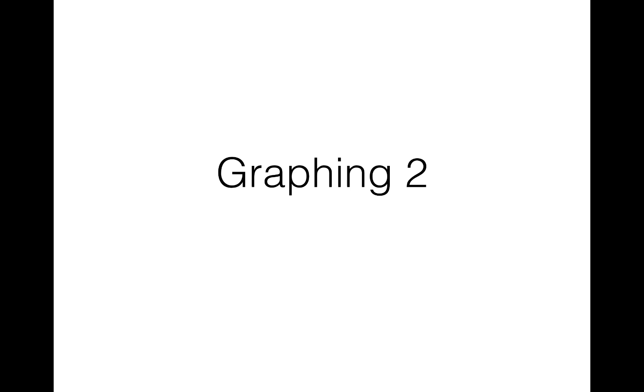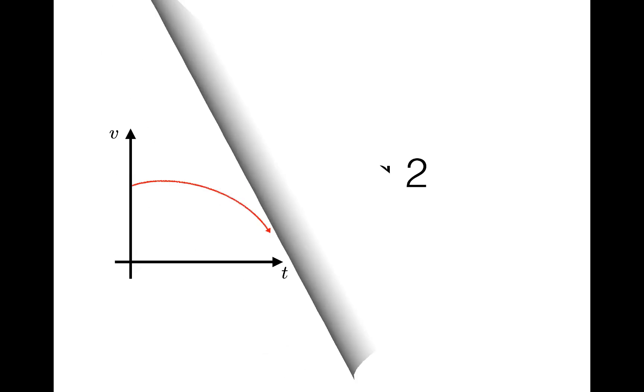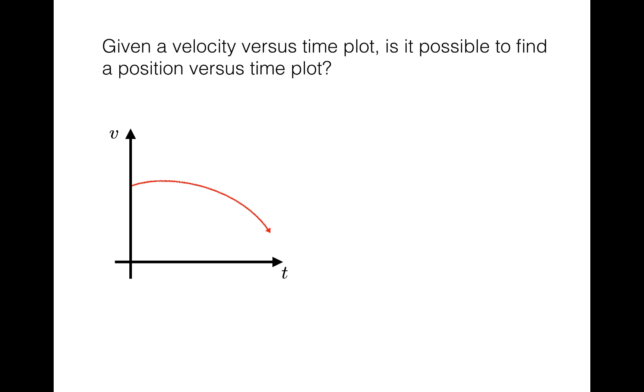This is the second video in a two-part series about graphing. In the last video, we saw that it was possible to find out something about velocity from the position versus time plot and something about acceleration from the velocity versus time plot. In this video, I want to talk about the reverse of that process. Given a velocity versus time plot, is it possible to find a position versus time plot?